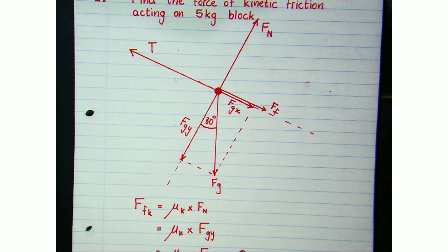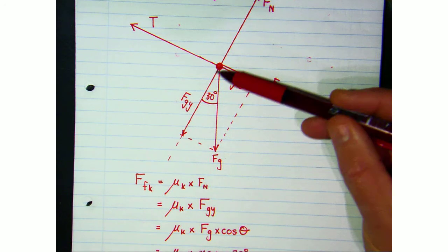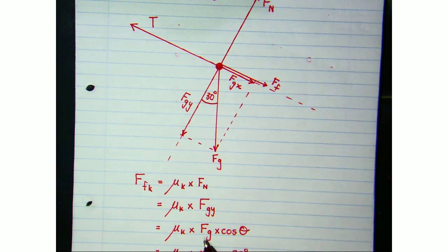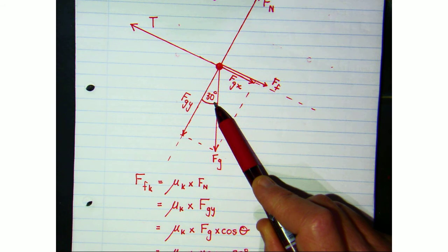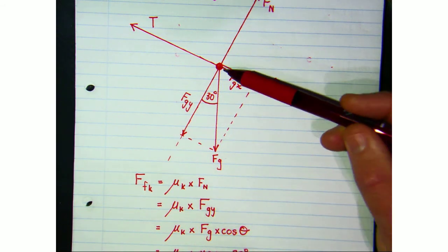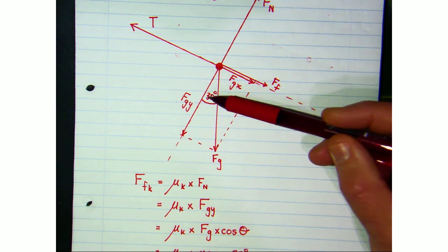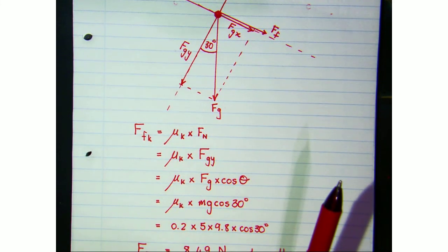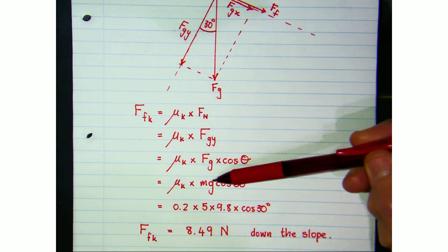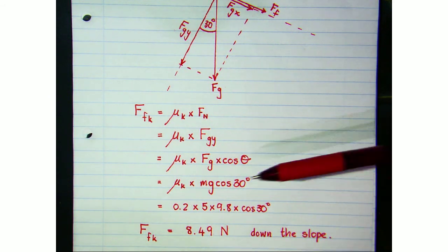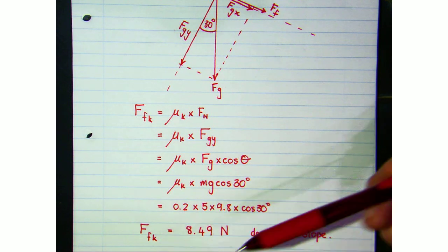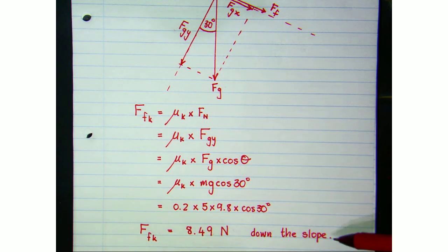Applying trigonometry to the force triangle, fgy is the adjacent side to the 30-degree angle, so fgy = fg × cos θ. The vertical component of the weight on an inclined plane is fg·cosθ. Substituting values — fg = mg, θ = 30° — the force of kinetic friction comes out to be 8.49 newtons, acting down the slope.